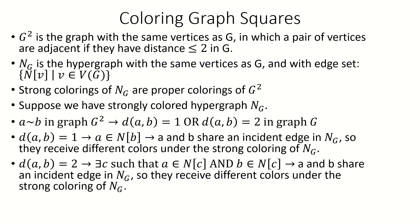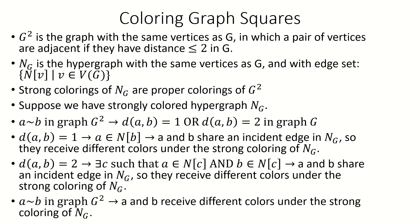We can now say that any pair of adjacent vertices in G squared receive different colors under any strong coloring of the neighborhood hypergraph, which is another way of saying that all strong colorings of the neighborhood hypergraph are proper colorings of G squared.